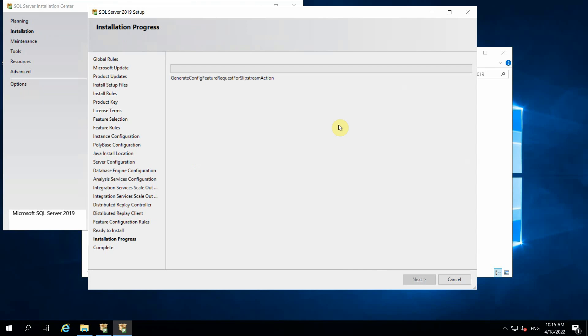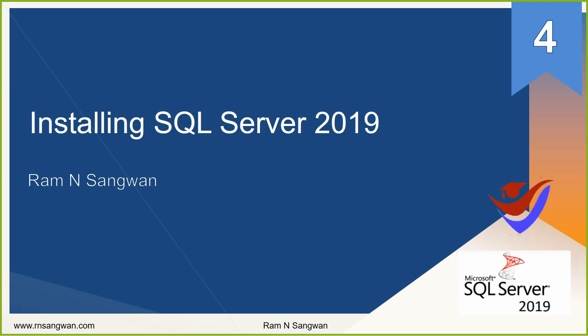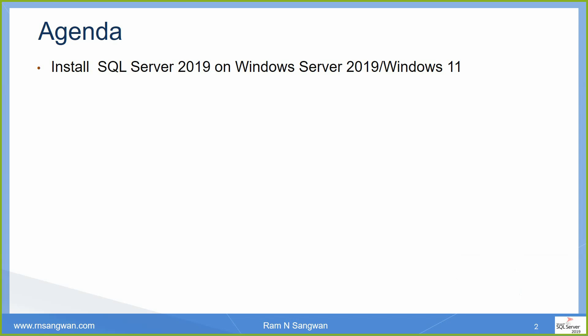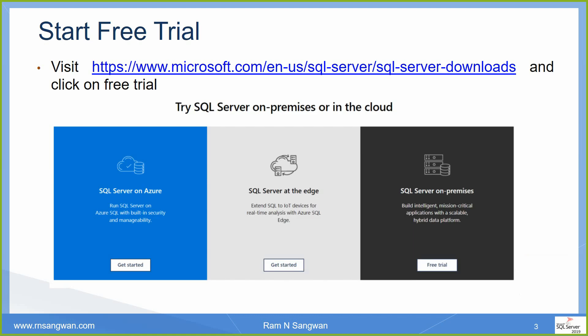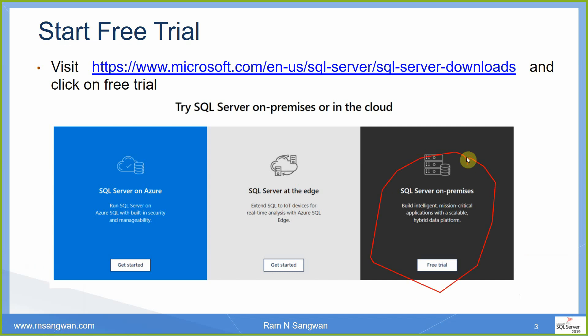After this it will finish and you will get a message: finished installing SQL Server 2019. The agenda is to install SQL Server 2019 on Windows Server 2019 or Windows 11 — I did both without any problem. To start, visit the Microsoft page and click on Free Trial. I took you to this page and we selected the SQL Server on-premises option.